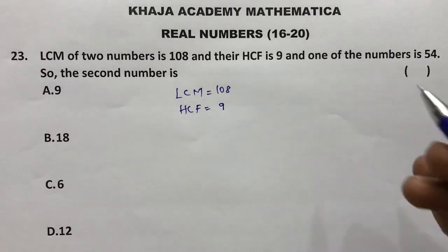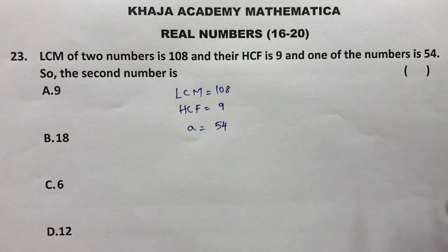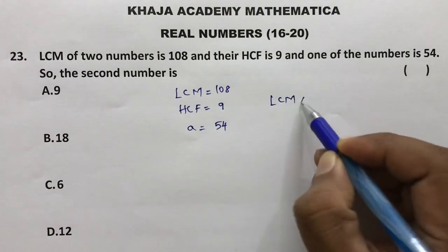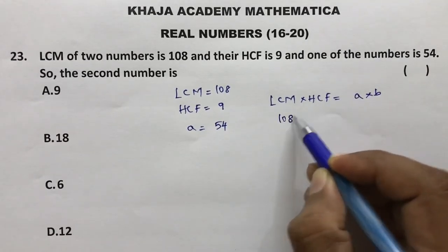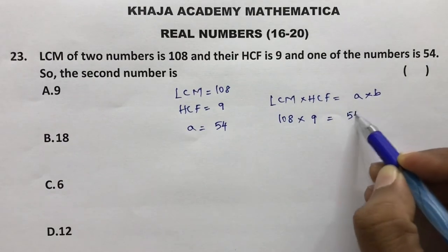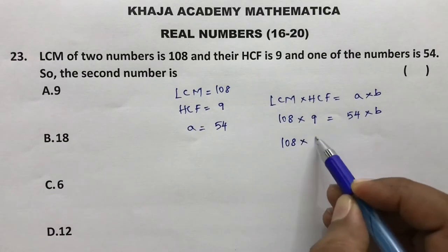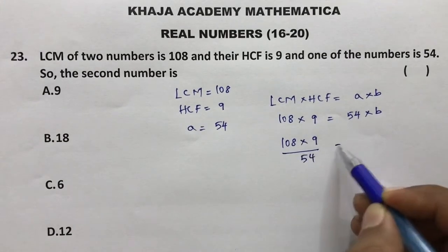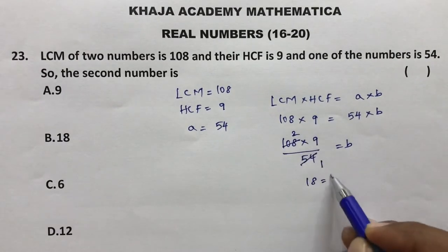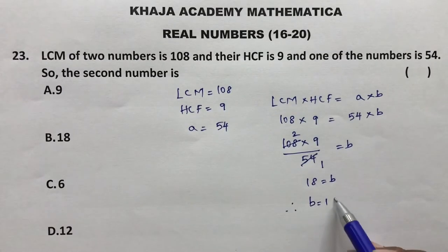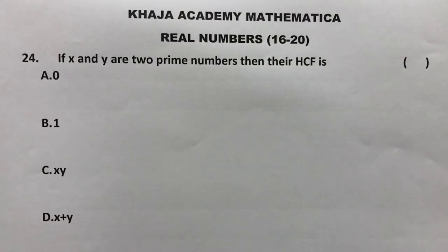Next question: the LCM of two numbers is 108 and HCF is 9. One number is 54; find the other. Using the formula: LCM × HCF = product of two numbers. So 108 × 9 = 54 × b. Transposing: b = (108 × 9) / 54 = 18. Therefore the other number is 18, and the correct option is B.